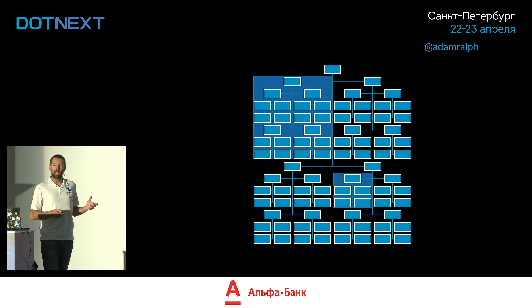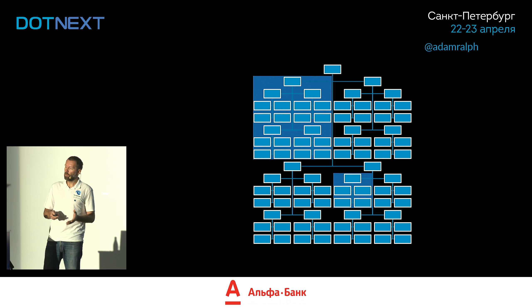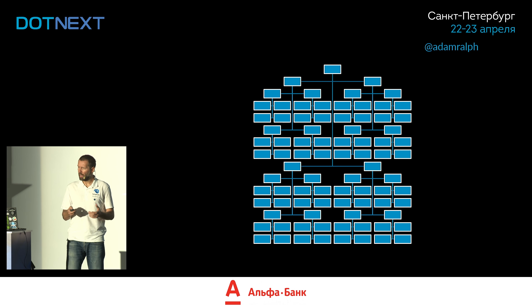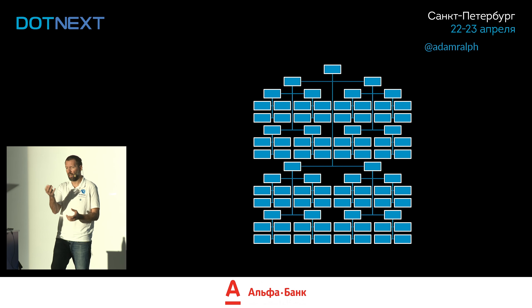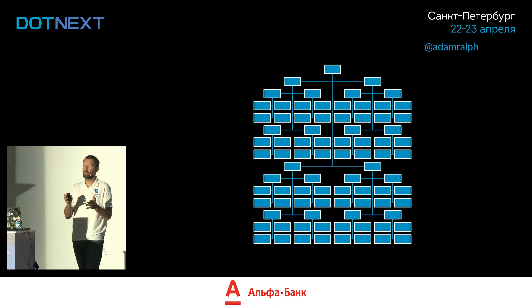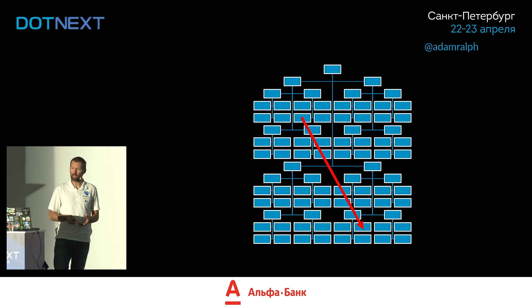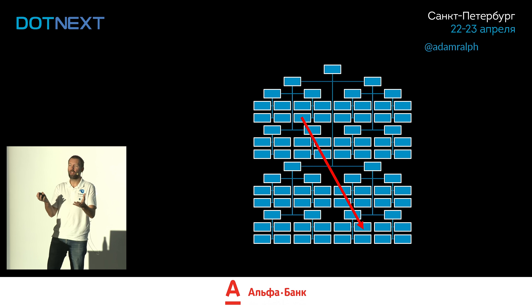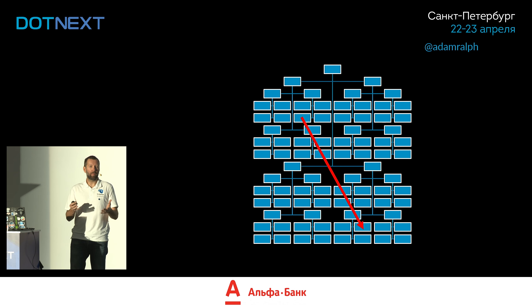But we haven't actually defined any service boundaries here — these are perhaps classes in a C# application. When the business comes along with a requirement, you might find you need a bit of information up here that exists somewhere down here. These are just classes, so you call one class from another, get some data, make a decision, and it works. You deploy to production, no bugs, the business is happy and you're happy.